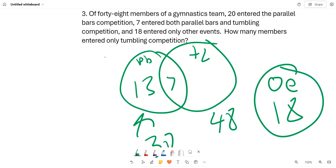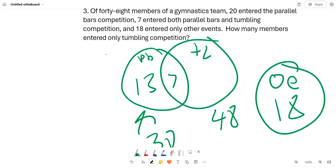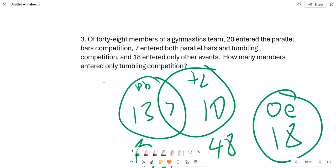Because we know that there are 13 in only Parallel Bars and 7 in both, that means there are only 10 in only Tumbling competition.